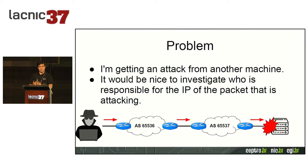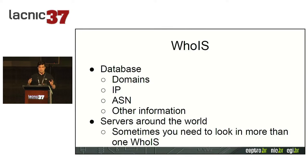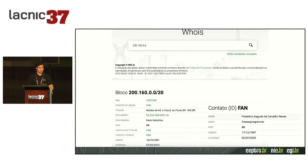For instance, if your system is receiving an attack, you start watching the logs and want to know who is attacking and why — maybe to block the traffic. A very important tool that many of you know is WHOIS. It's a database where you can look up domain and autonomous system information, available in several places around the world. Through the BR registry WHOIS, you can find the IP that is attacking.